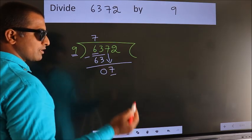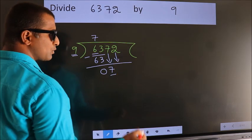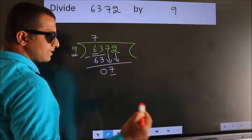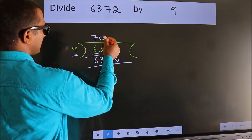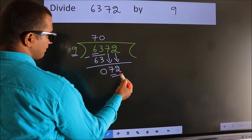So, we should bring down the second number. And the rule to bring down second number is put 0 here. Then only we can bring down this number. So, 72.